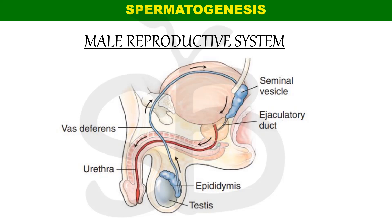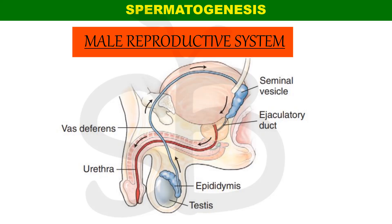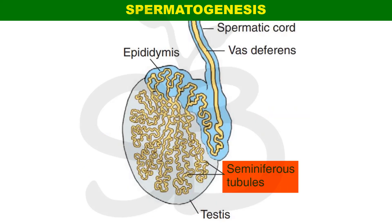Spermatogenesis occurs in the male reproductive system. You will see the video on the male reproductive system for reference. The location of spermatogenesis is the testes, specifically within the seminiferous tubules. This is where the spermatogenesis process takes place. The seminiferous tubules, when enlarged, show the internal structure.